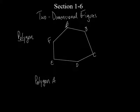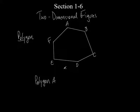It doesn't matter which way you go around the polygon. They don't want you to go through the polygon. So if you start at A, you can either go to B and work your way around, or start at A and go to F and work your way around. So I'll go A, B, C, D, E, F.